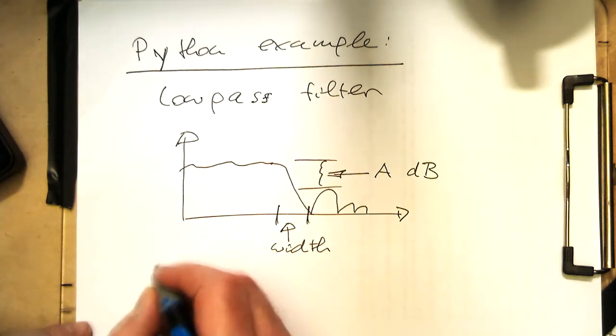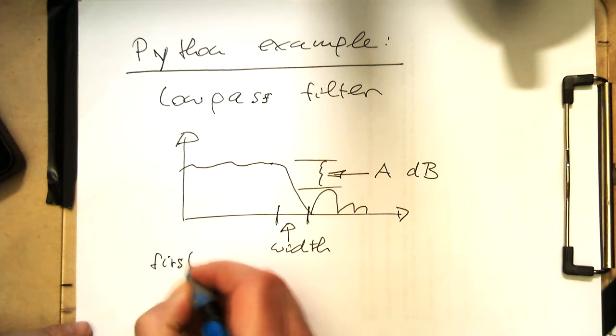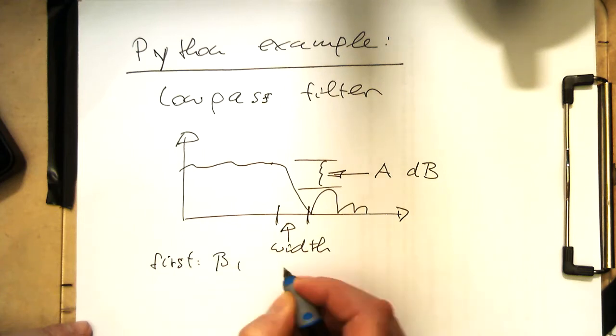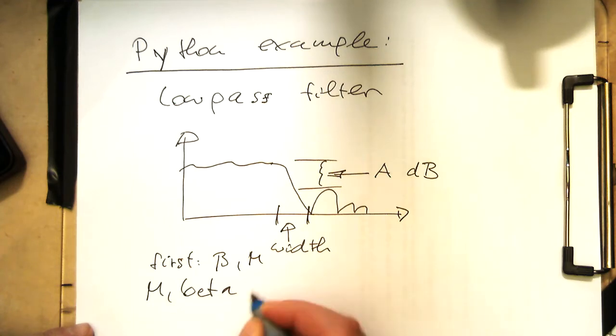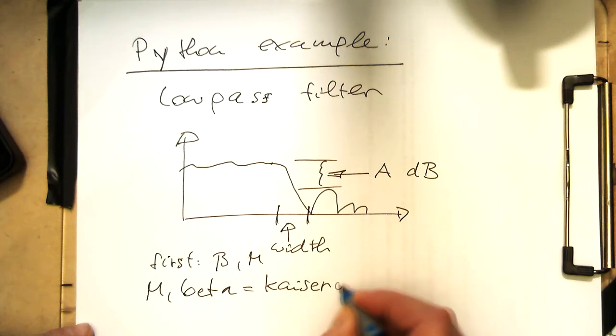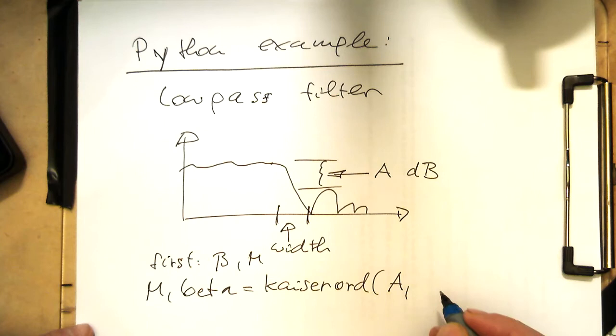And so beta and M, and there's a handy command which just calculates this according to the formulas Kaiser order. And then, and here we've got our A and then width.